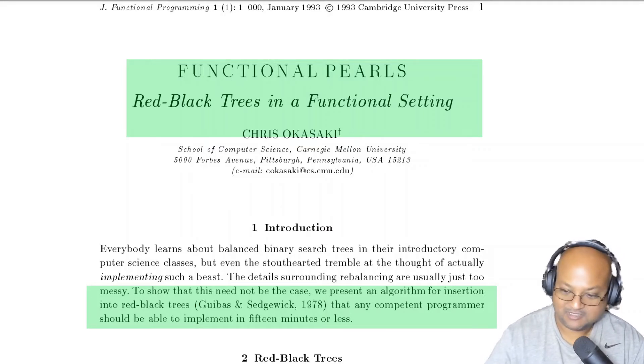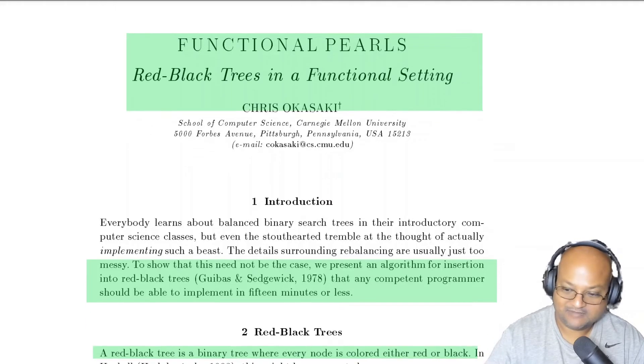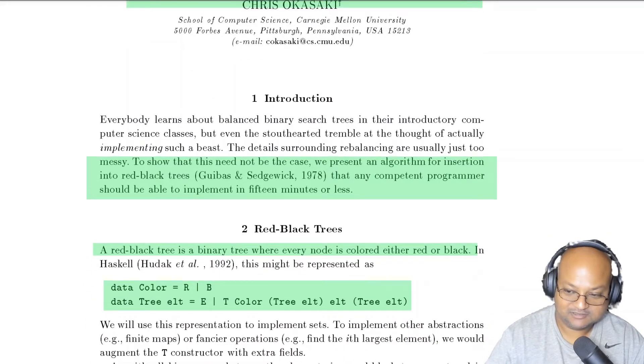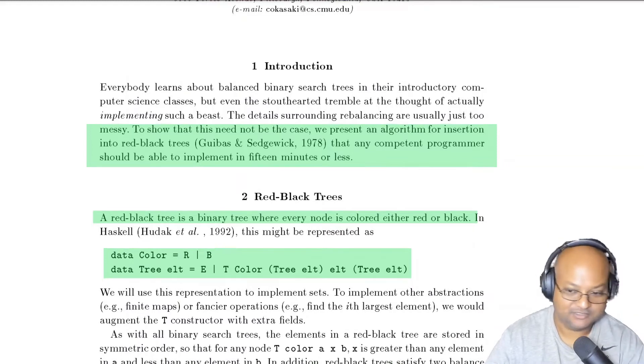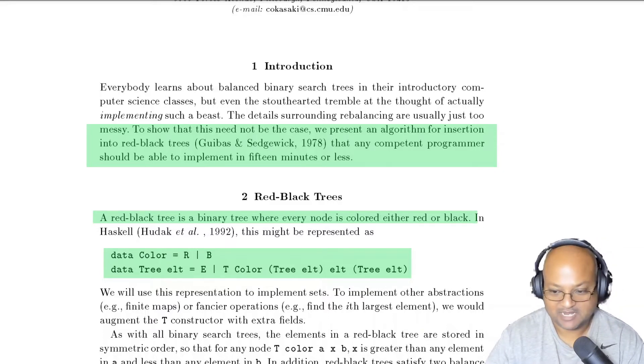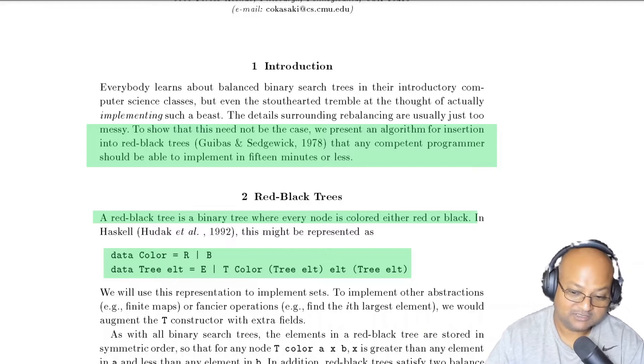I thought this would be a good example of functional programming because in every introductory data structures course, one of the most dreaded assignments is to implement a red-black tree. The reason for this is because there are just so many different cases to consider in how to rebalance red-black trees. The cool thing about this paper, in addition to giving a very elegant implementation, is also that the author simplifies a lot of those messy cases down to just four pretty easily understandable ones.